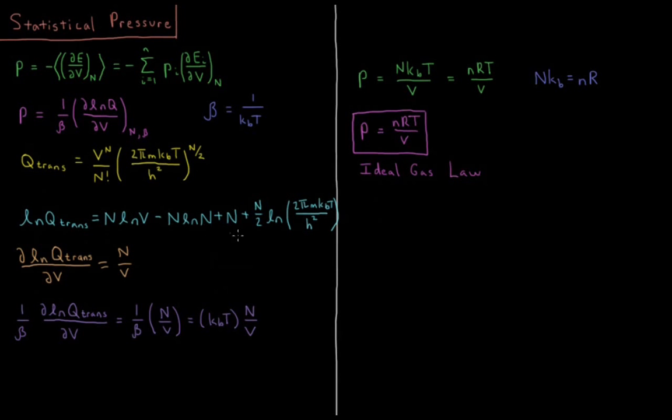Anything that doesn't have volume dependence is going to go away. So that partial derivative of N log V, ddV of log V is 1 over V, so I have N over V.